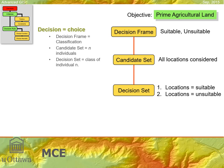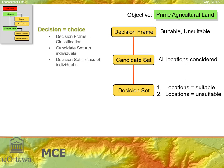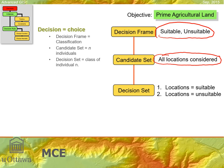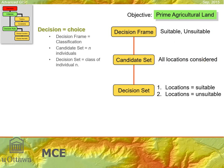Let's look at another example with spatial data. Our objective is identifying prime agricultural land. Our decision frame is: which locations are suitable or unsuitable for prime agricultural production? We present a region — all the cells within a raster — as locations that can be considered. After applying our decision rules, we get a decision set: these cells are suitable and these others are unsuitable.